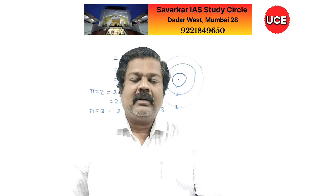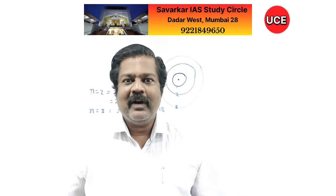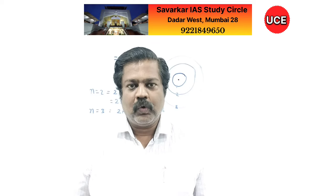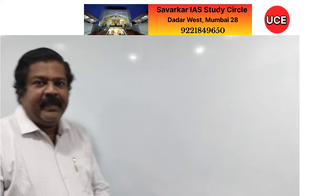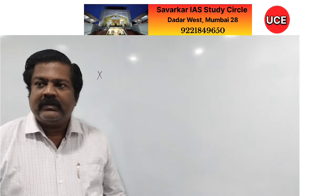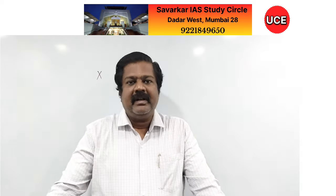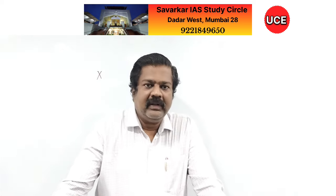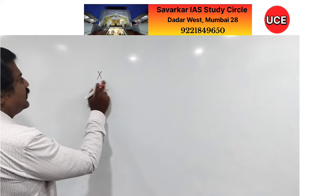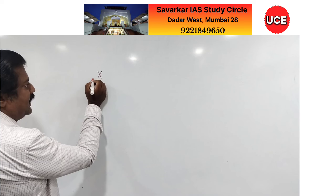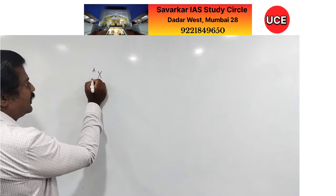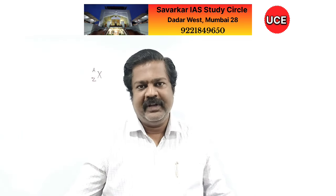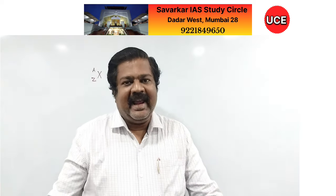Now we discuss how many electrons, protons, and neutrons are there in an atom. Any element can be given a symbol — for example, X. These symbols are given based on the Latin name of the element. The element is written with symbol X, with A written above and Z written below.